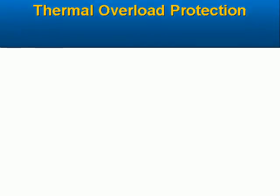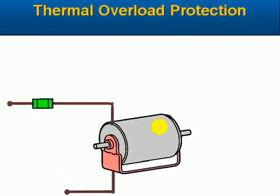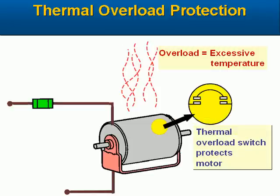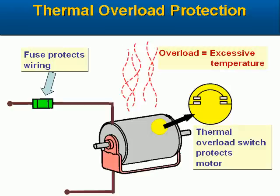In some instances, additional protection may be needed. Electric motors under stress may overheat, damaging the insulation on the windings inside them. The circuit breaker or fuse protecting the circuit may not receive enough current to trip. Thermal circuit breakers can be employed inside the motor to protect it from excess heat that results from excess loading. Such circuit breakers can be manually or automatically reset once the motor cools off.